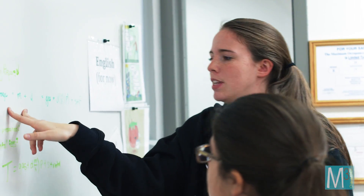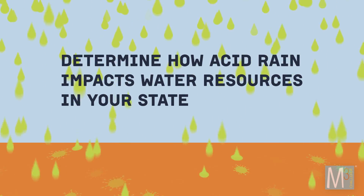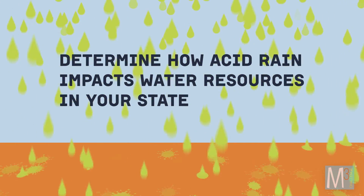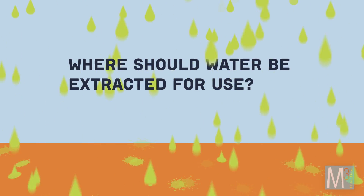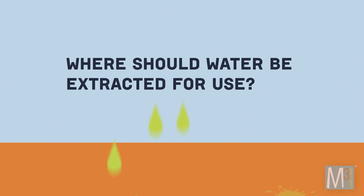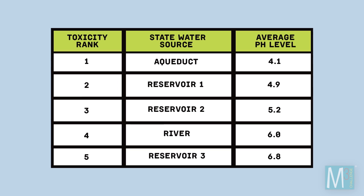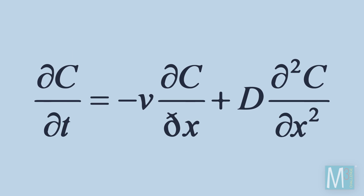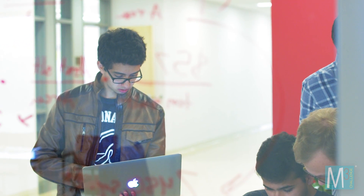You'll find many ways to answer an open-ended mathematical question. For example, suppose you need to determine how acid rain impacts water resources in your state. You arrive at a problem: where should water be extracted for use? One approach might involve a simple table that ranks water sources by levels of toxicity. More complicated equations may also be used — for example, creating a scorecard for each water source or eliminating sites based on other criteria.